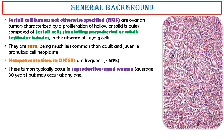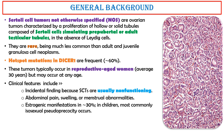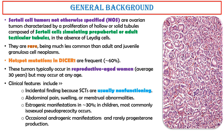These tumors typically occur in reproductive-age women, average 30 years, but may occur at any age. Clinical features include incidental finding, occasional androgenic manifestations, and rarely progesterone production. There is occasional association with Peutz-Jeghers syndrome and renin production.